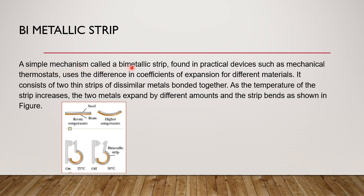Thermostats today are digital, but in the old days thermostats were purely mechanical. The principle was thermodynamics — for example, a strip that is bent: when heated it straightens and expands, and when cooled it bends again. This was used for cut-in and cut-out in air conditioning units. When the desired temperature inside the room is reached, the bimetallic strip contracts and cuts off the compressor.